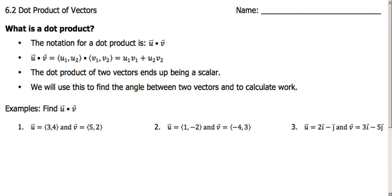The notation for a dot product looks like so. We've got a vector u, vector v, and just a solid dot in between — just like we use a dot for showing the product of two numbers. Or, if you think back to matrices, you've learned how to find the dot product of matrices. This is really analogous with that.